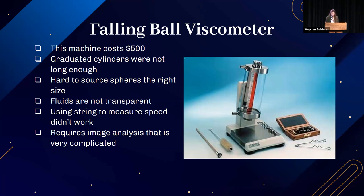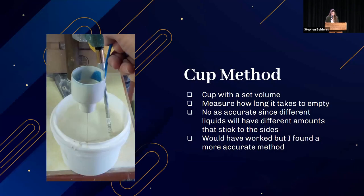I could have ordered a taller graduated cylinder, but there were so many issues with the ball viscometer method that it didn't seem like a good investment. Another common method is the cup core method, which uses a cup with a set volume attached to a rod and a hole in the bottom for liquid to flow through. Recording the time it takes for the fluid to stop flowing can help test viscosity. While trying to order one of these cups, I came up with a new idea.